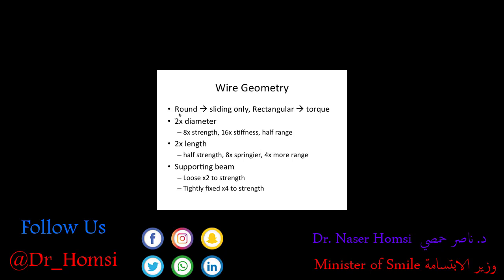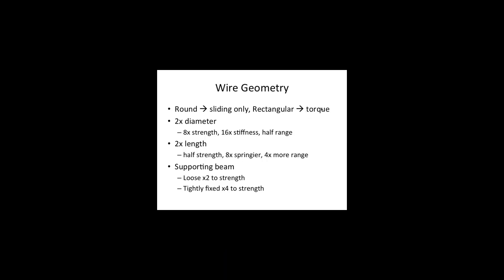For geometry: a round wire slides through brackets, whereas a rectangular wire in a rectangular bracket slot enables you to apply torque. If we double the diameter, we increase strength, increase stiffness, and halve the range of action. If we increase the length of something, we decrease strength, increase springiness, and increase range. Thickening a wire makes sense that it becomes stronger and stiffer, and increasing the length makes sense that it has more range of flexibility.